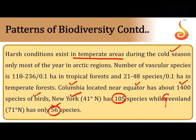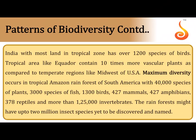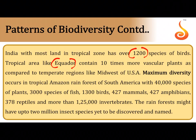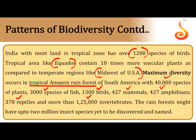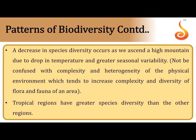India, with most of its land in the tropical zone, has about 1,200 species of birds. Ecuador in South America has 10 times more vascular plants than the midwestern USA (in the temperate zone). The Amazonian rainforest is called the cradle of speciation, with more than 40,000 species of plants, 3,000 species of fish, 1,300 species of birds, 427 species of mammals, 378 species of reptiles, and 125,000 species of invertebrates.